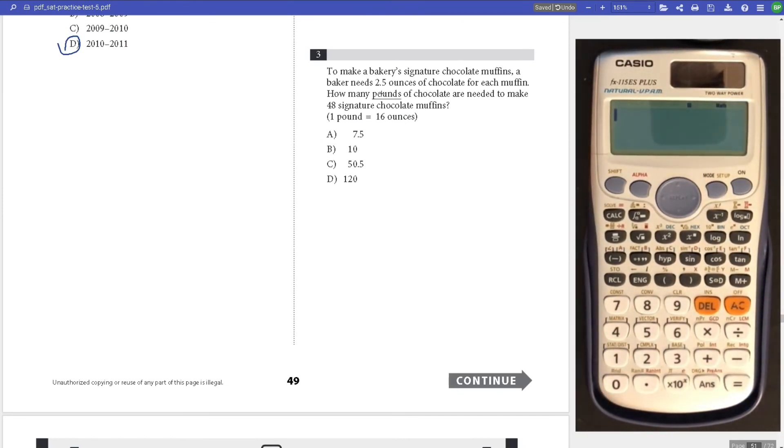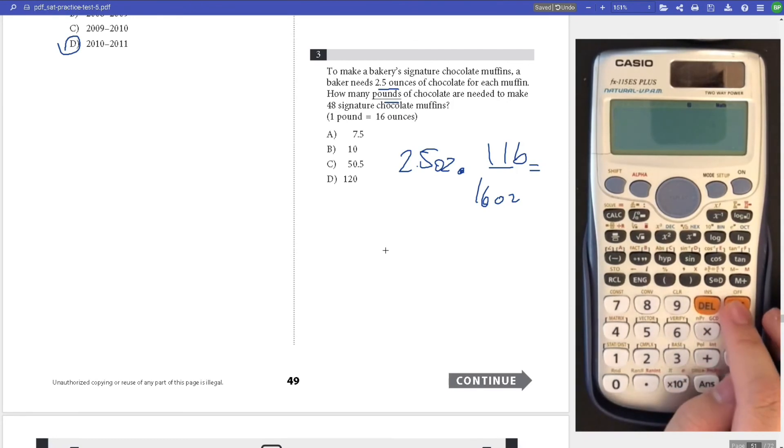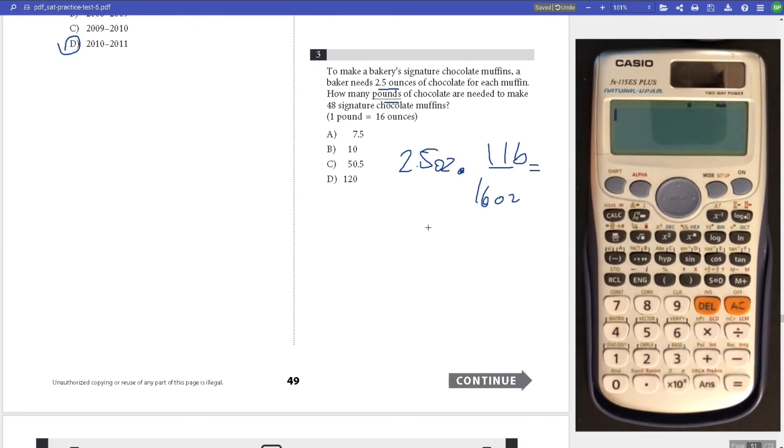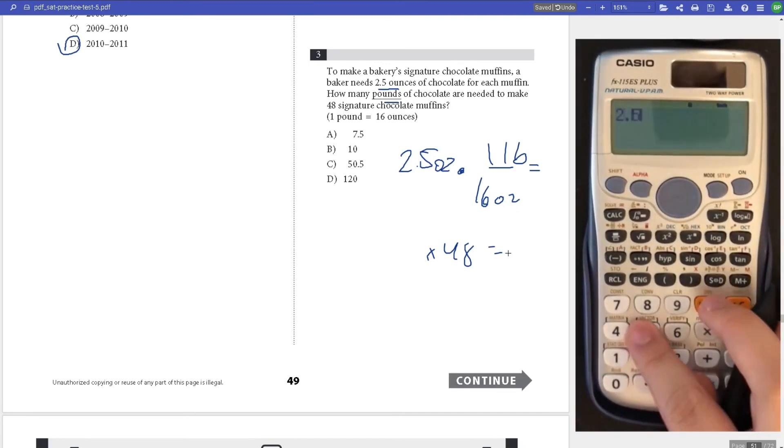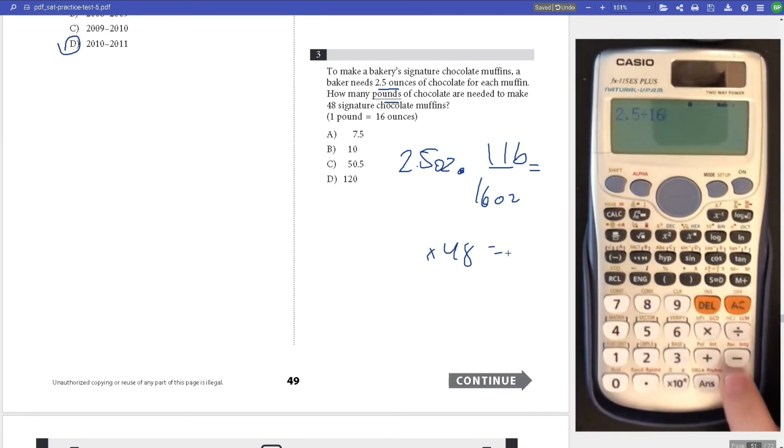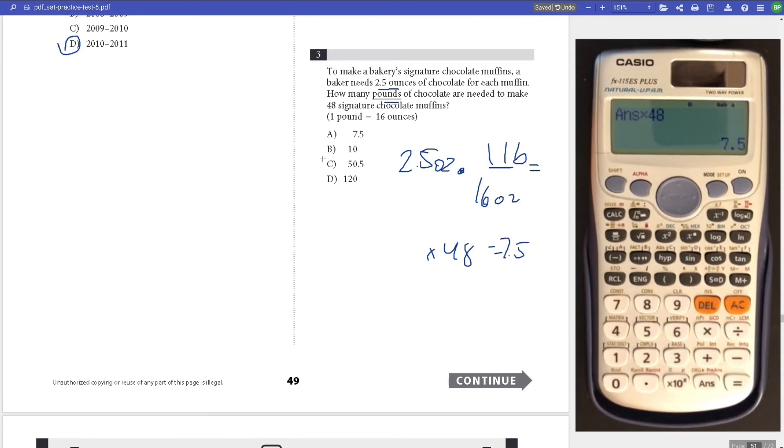Number 3, he's making muffins and needs 2.5 ounces for each muffin. How many pounds does he need? 2.5 ounces is a dimensional analysis. Times that by 16 ounces over 1 pound equals 2.5 divided by 16. We also have 48, so times by 48 at the end. 2.5 divided by 16 times 48 equals 7.5. Answer A.